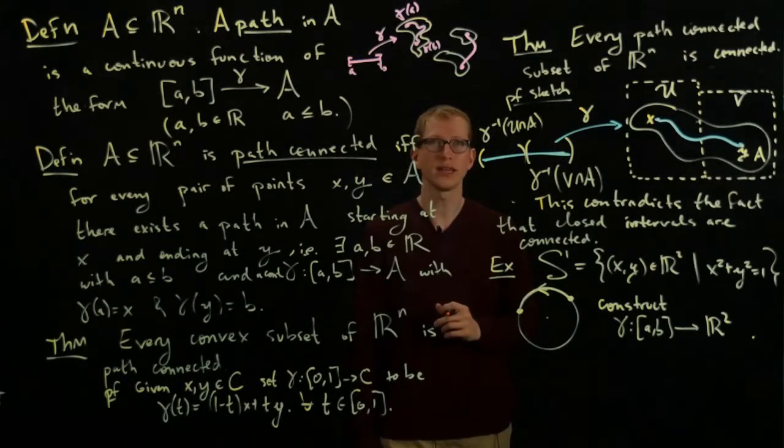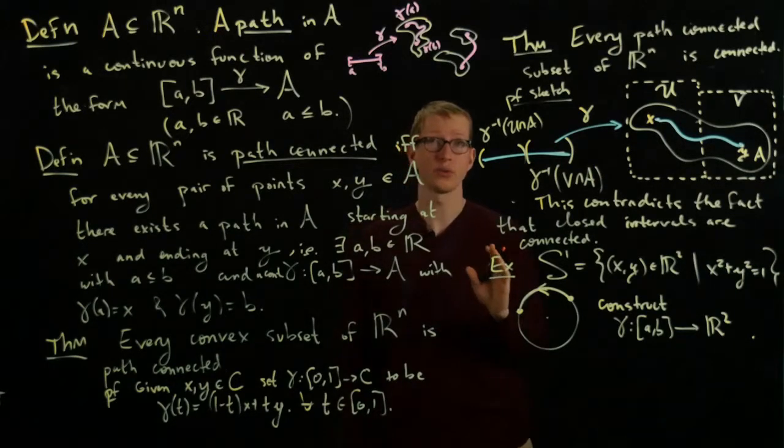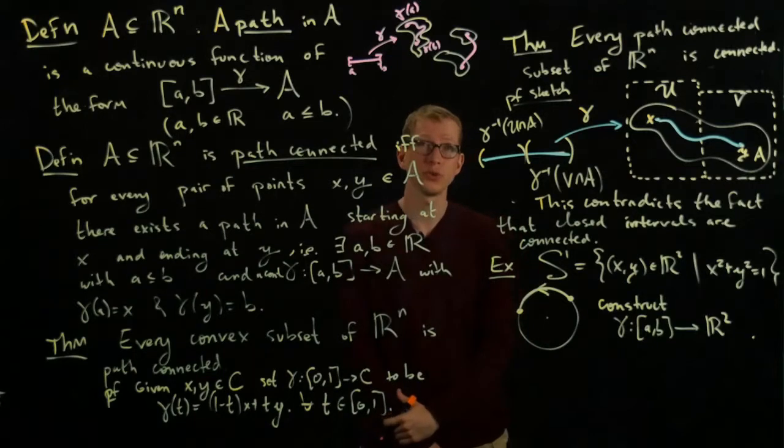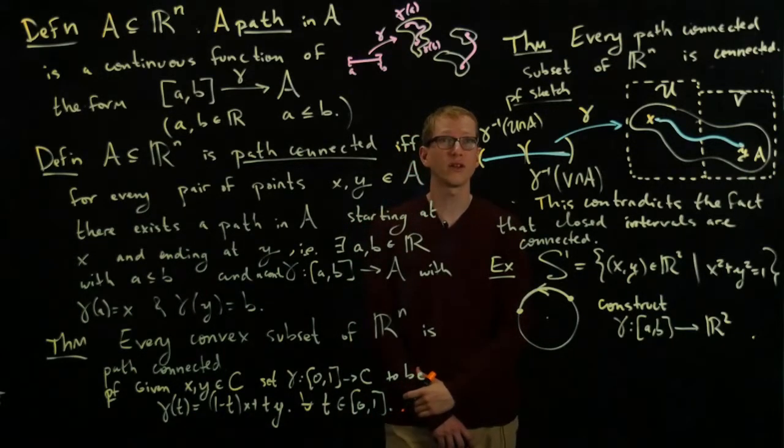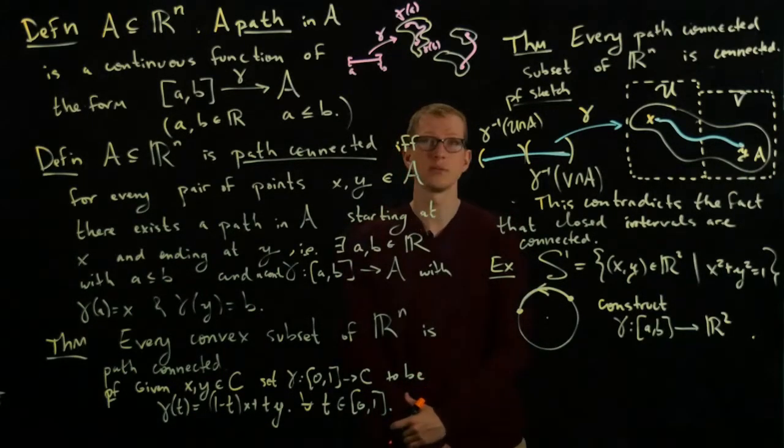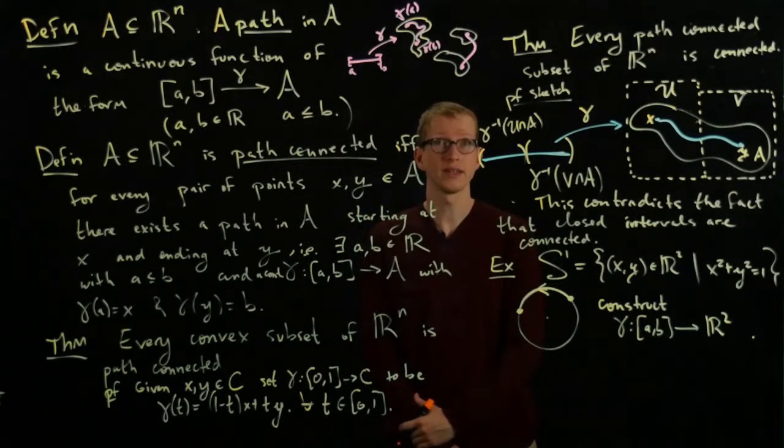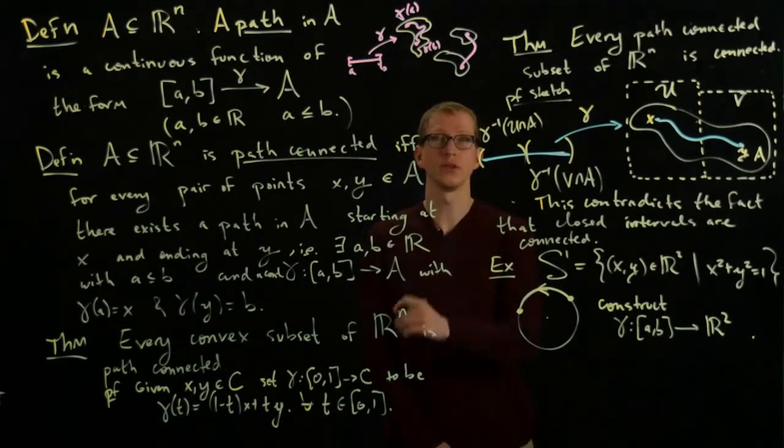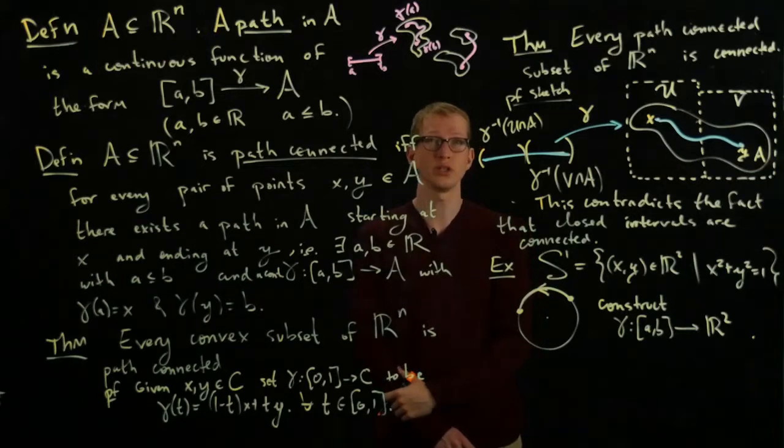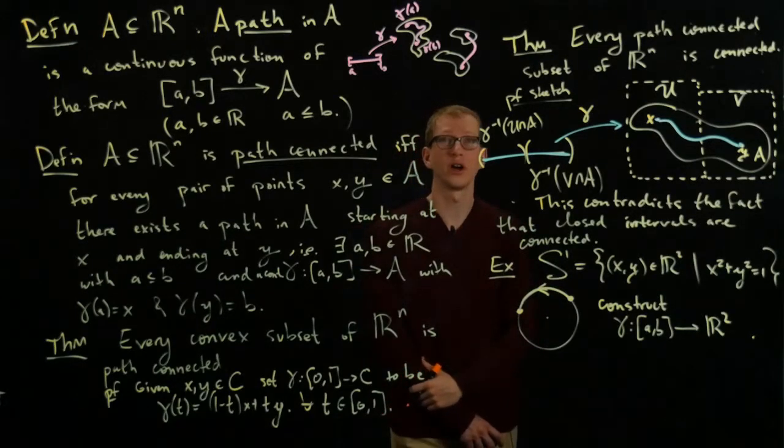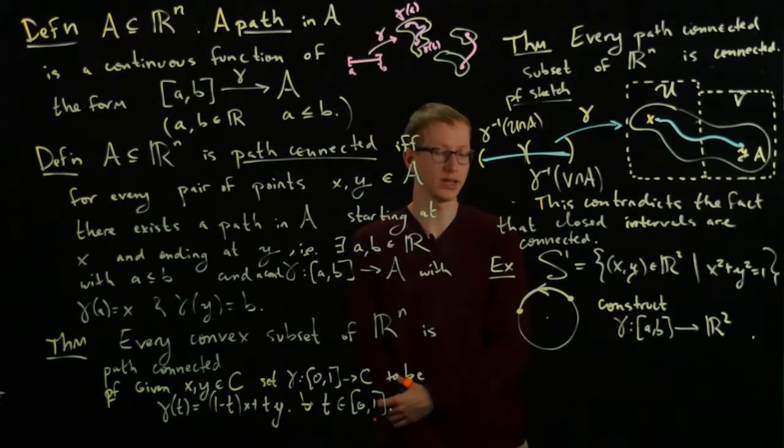What about the converse - is every connected subset of Rn path-connected? If we look at just an ordinary real line, we know this is true. Remember, we had this theorem that said not only is every connected subset of R path-connected, because it's an interval, it's actually also convex, which is much stronger. However, in Rn, there are counterexamples that go in each of these directions.